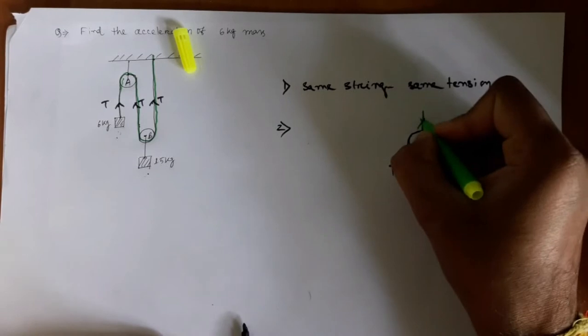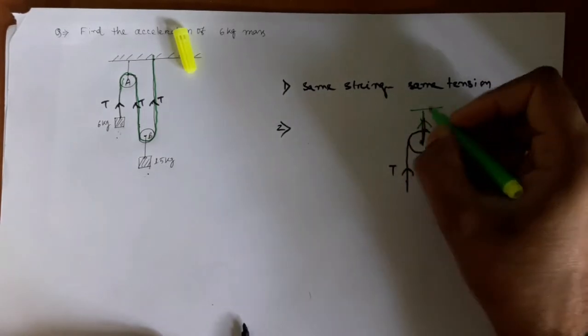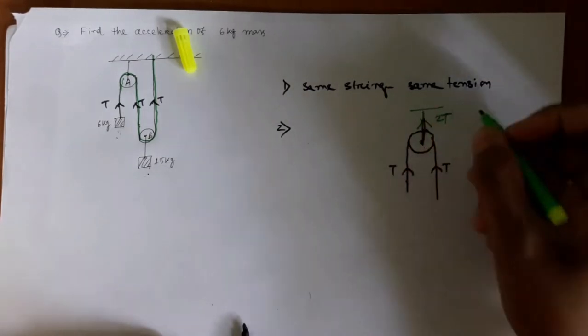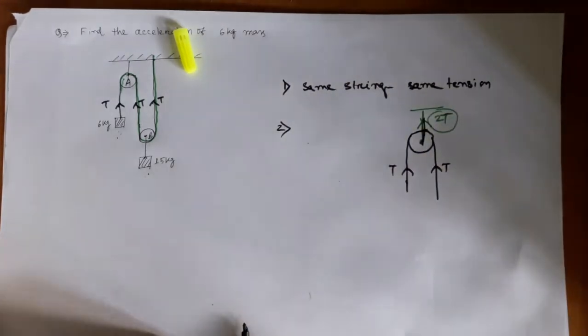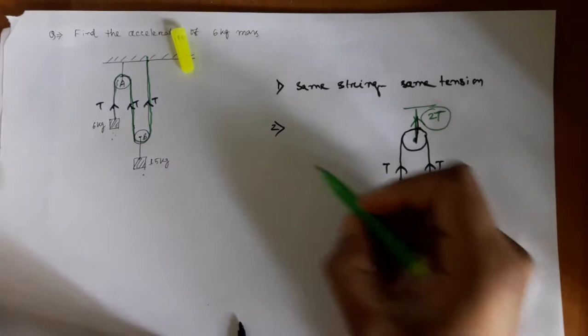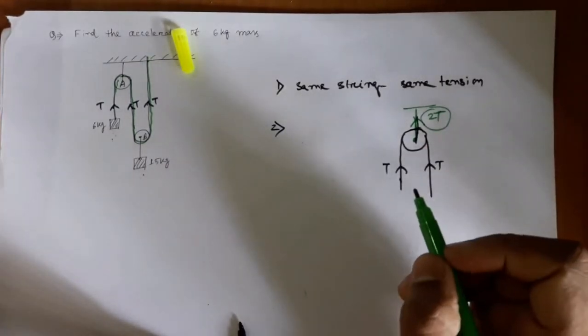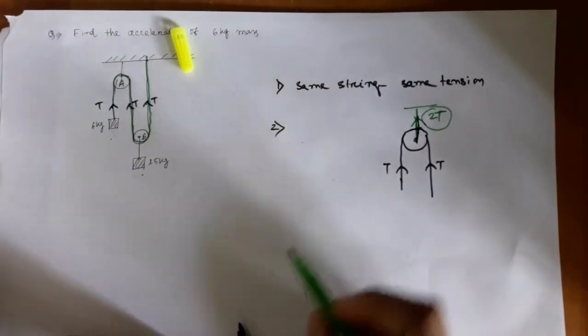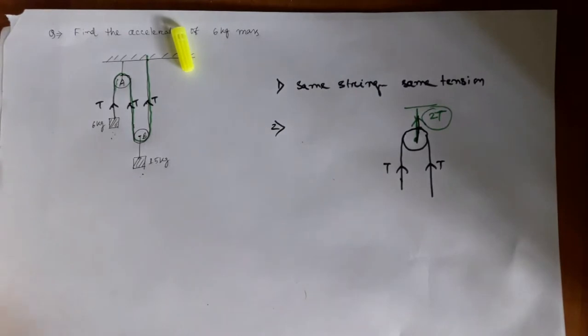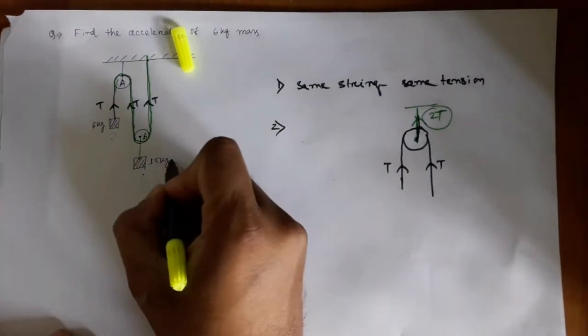If the tension in the lower string on both sides is T, then the tension in the upper string is twice T. If the tension in both strings is T and T, the tension in the upper string is twice T. You have to keep that in mind before doing such pulley-connected problems.